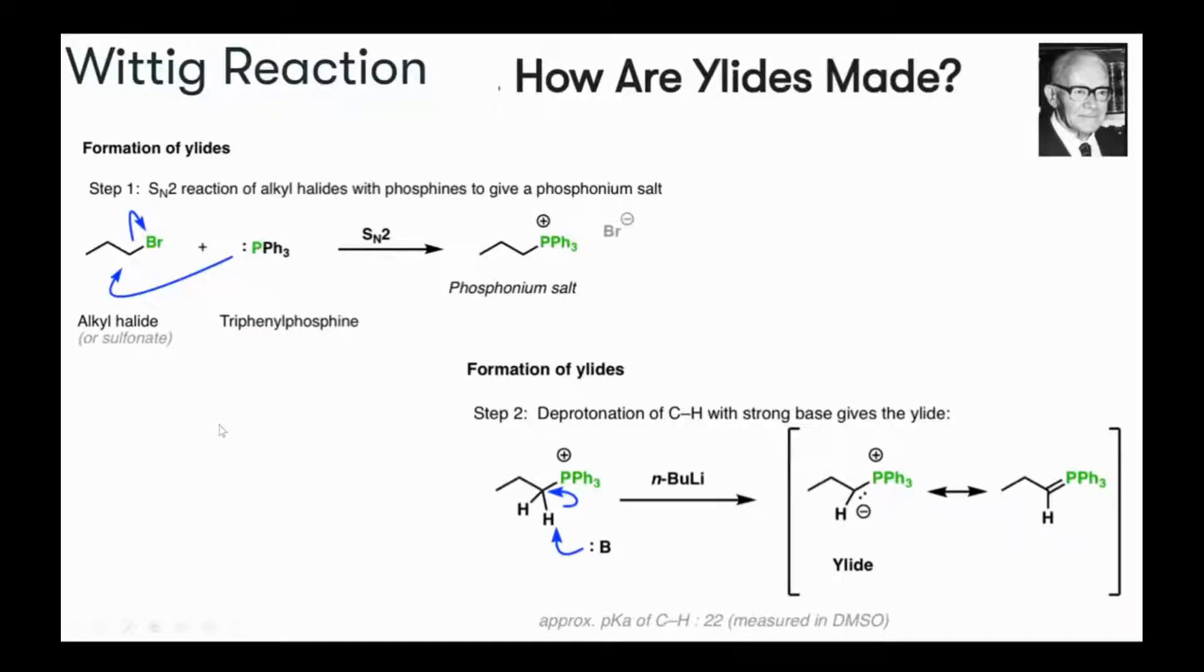Hello guys, we are doing the Wittig reaction and this is part 2. As I mentioned in my previous video, I'll be talking about how ylides are made in Wittig reaction. Basically, ylides act as the nucleophilic part in the Wittig reaction and the electrophilic part is carbonyl compounds, whether aldehyde or ketone.